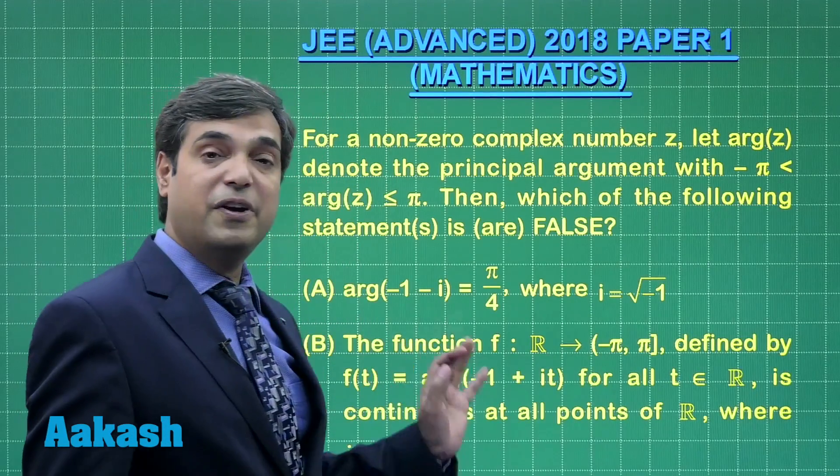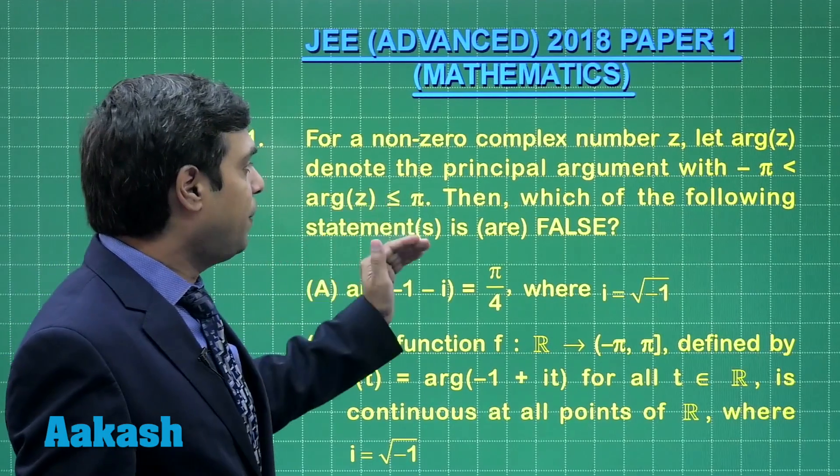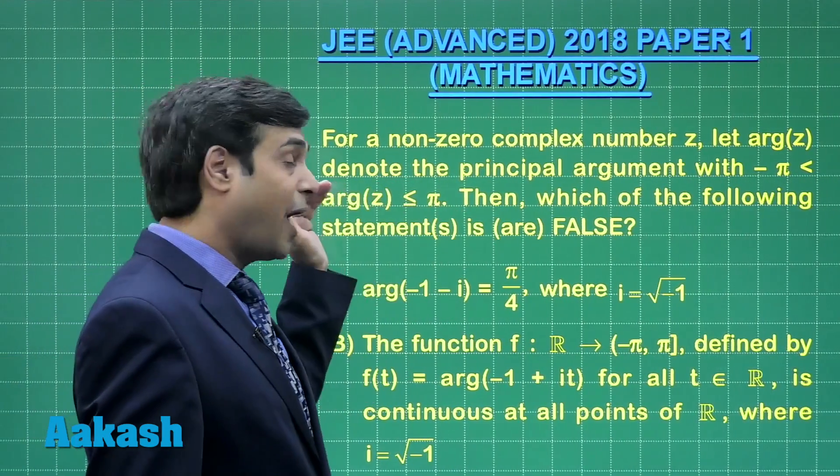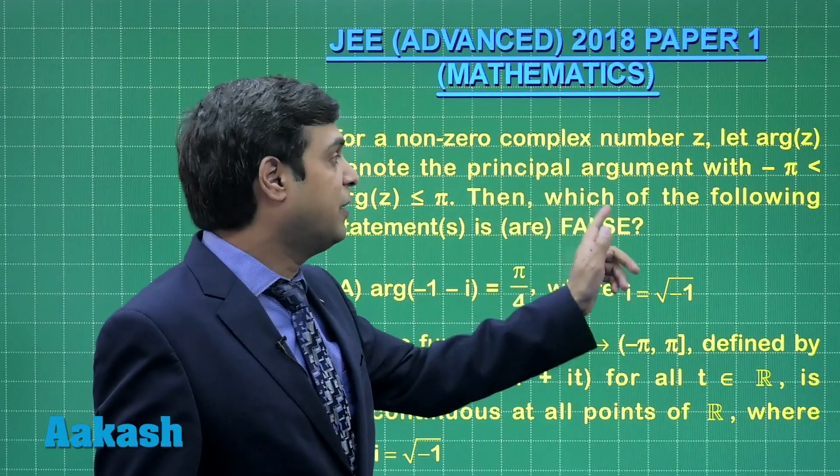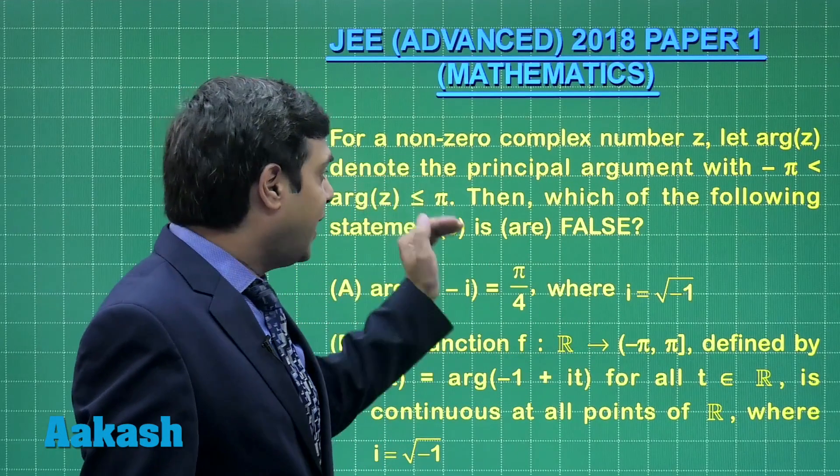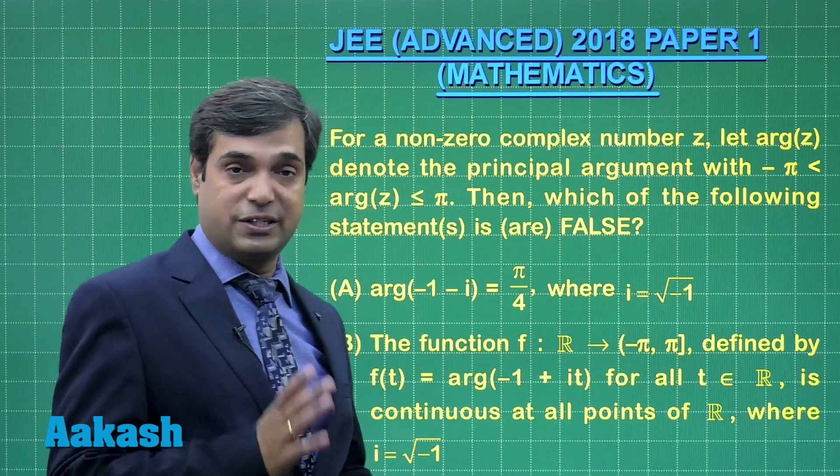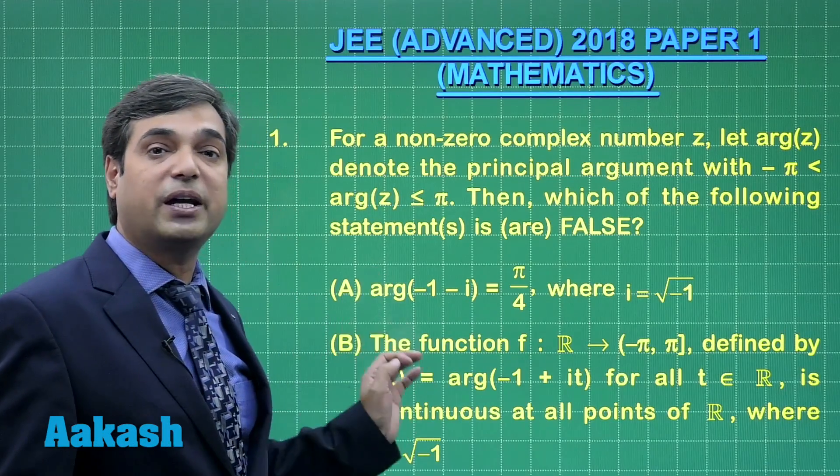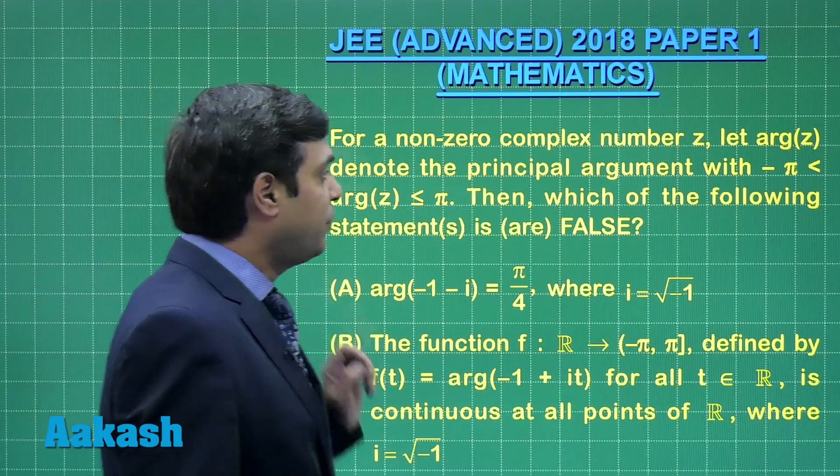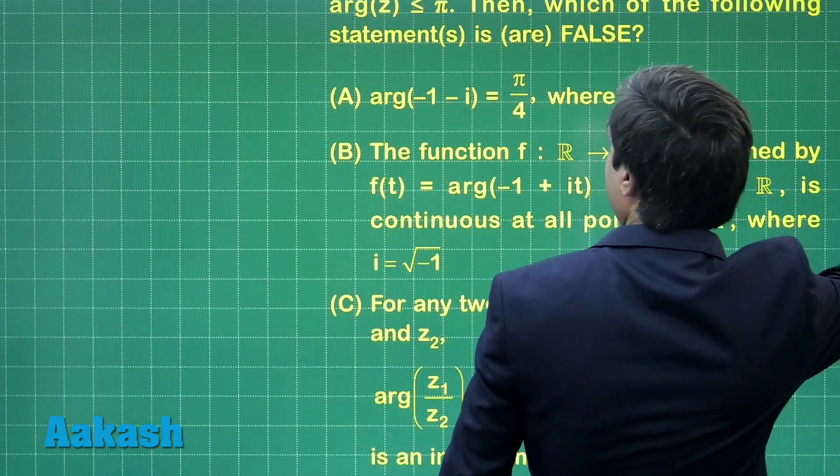Starting with the first question which is from complex numbers. For a non-zero complex number z, let argument z denote the principal argument with minus pi to pi. Then which of the following statements is or are false? We have to choose the incorrect statements from the given four options. We have to solve all four options one by one starting with the first one.